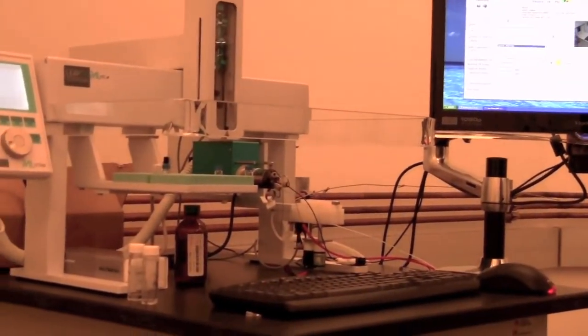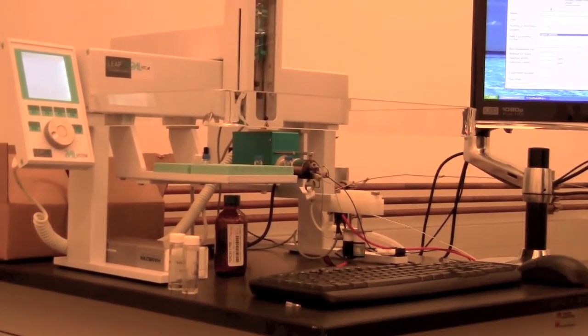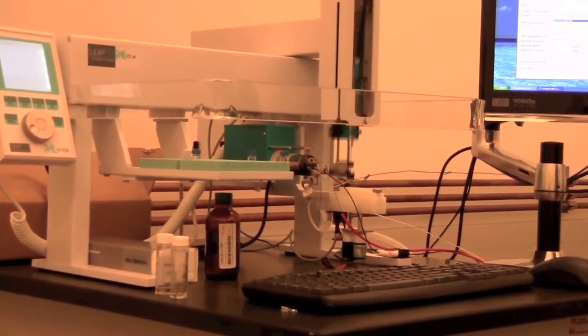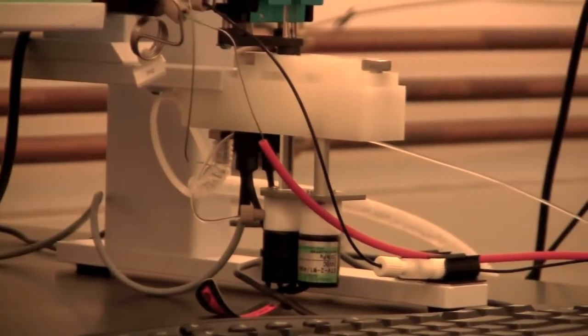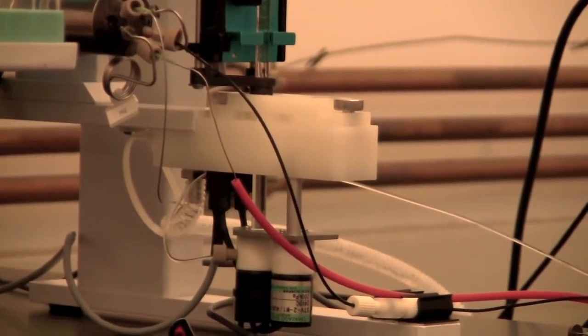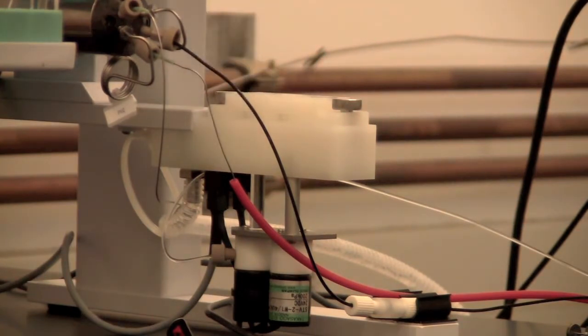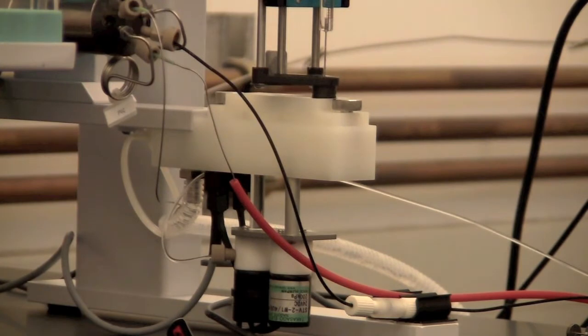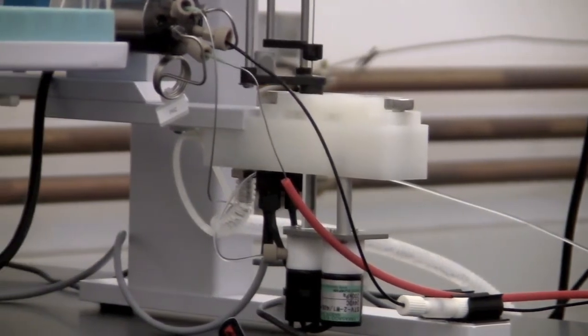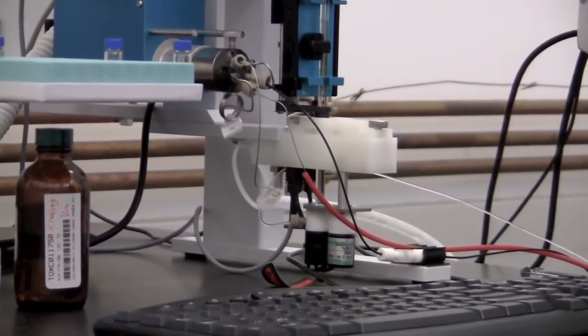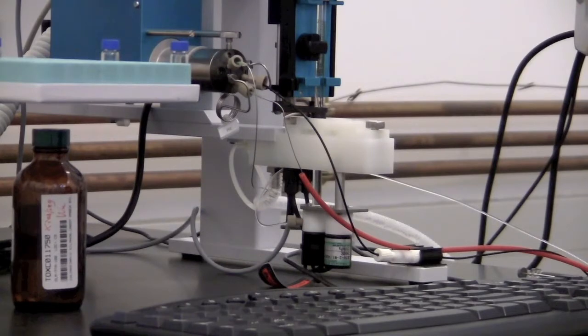Coming over here, first thing it will do is wash the syringe. It washes the syringe by taking the DMSO solvent, loading it into the syringe, and then flushing it into the waste. Then it does the second wash.